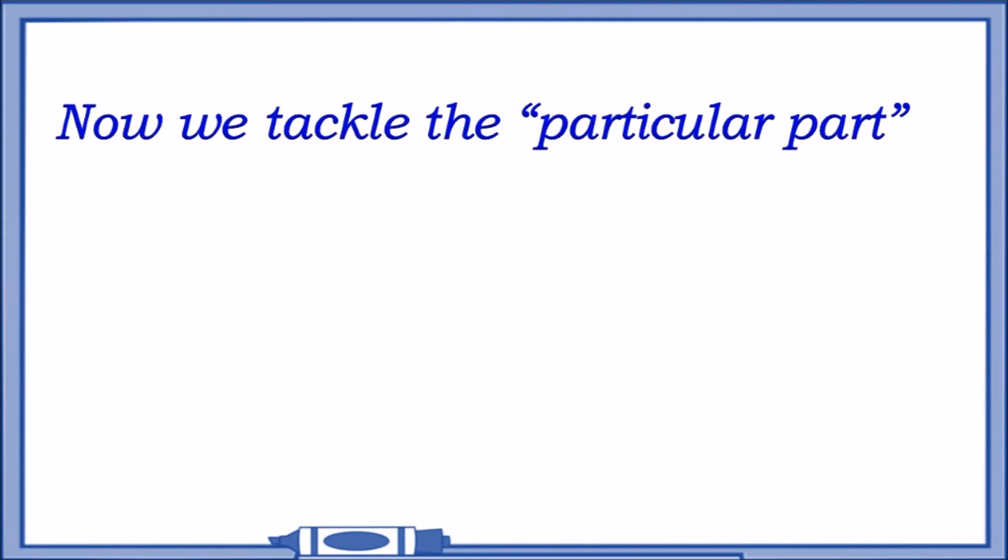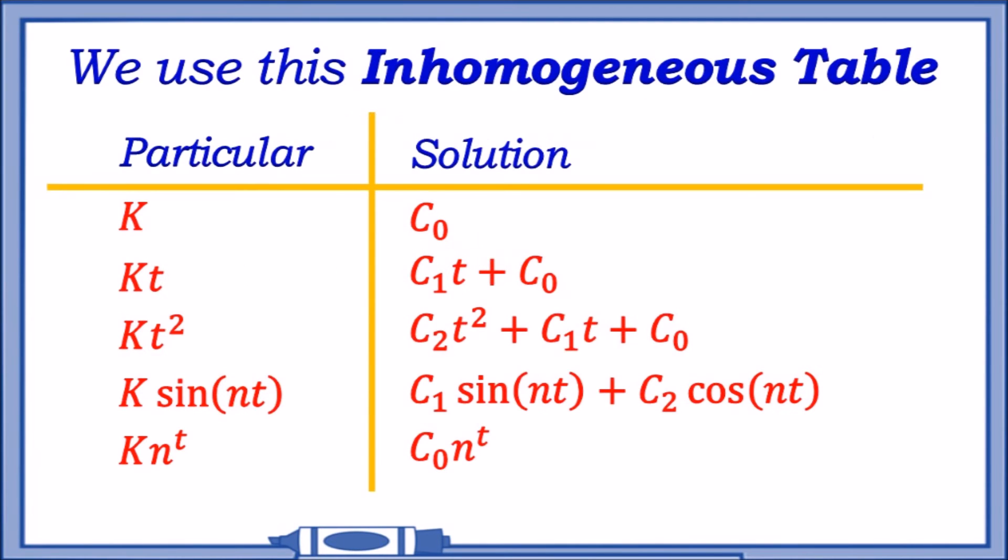The particular part was t. What do we do? First things first, we need to know how to solve this equation. We solve it by considering this inhomogeneous table.